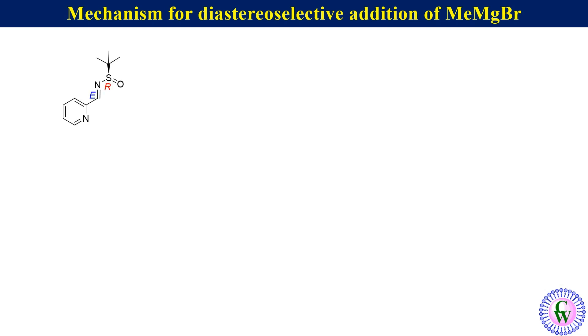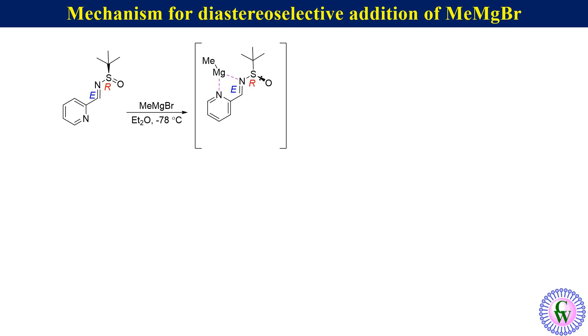Now we come to the mechanism for the diastereoselective addition of methyl magnesium bromide to the imine. When R-E-sulfinamide is allowed to react with methyl magnesium bromide, the nitrogen of the pyridine and the imine coordinate with the magnesium metal to produce this organomagnesium complex.